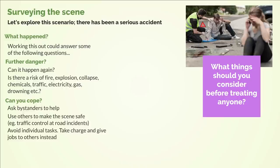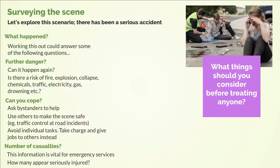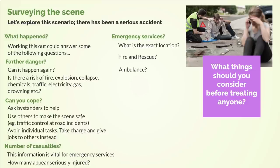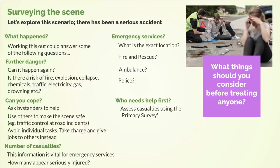Number of casualties — this information is vital for emergency services. How many appear seriously injured? Emergency services: what is the exact location? Fire and rescue? Ambulance? Police? Who needs help first? Assess casualties using the primary survey. If there are multiple casualties, tell others what to do.